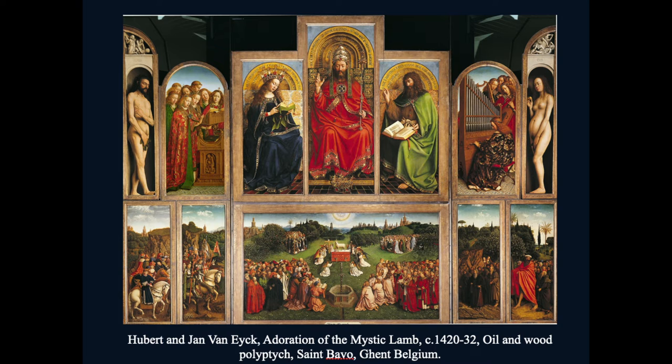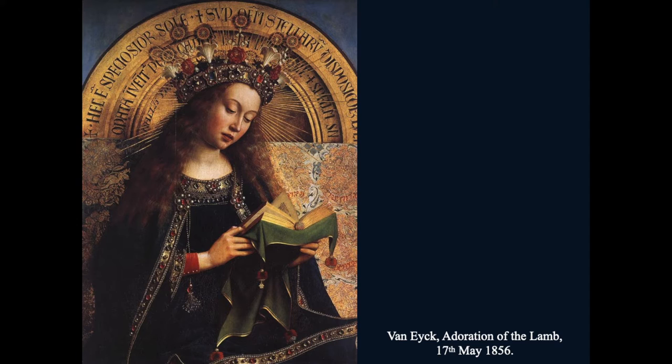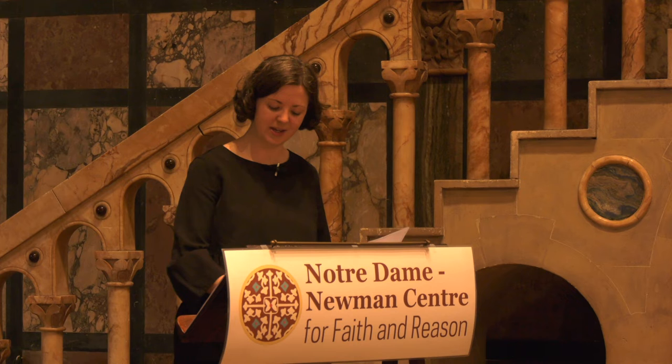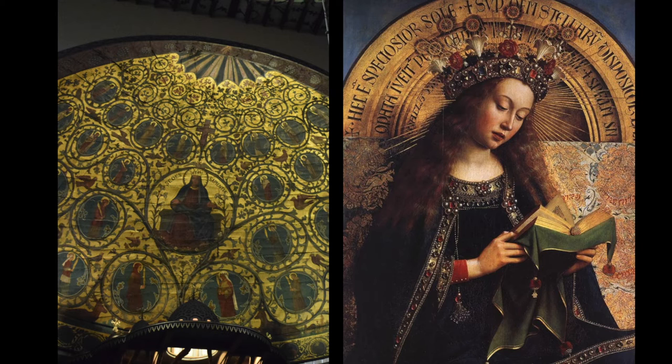Another reference for the apse in particular is the Adoration of the Mystic Lamb in Ghent, Belgium, and specifically Mary in this painting. Paulin is said to have gone multiple times to see this piece and had become totally fascinated by it. One writer on this space says he found it really striking. We have very similar braiding, painting, and ornamentation on the folds of Our Lady's dress, and up here also.